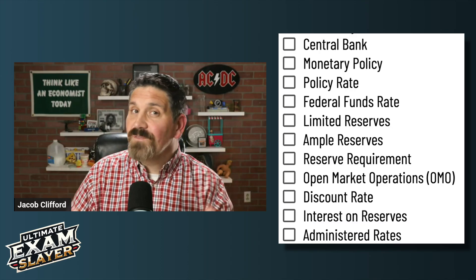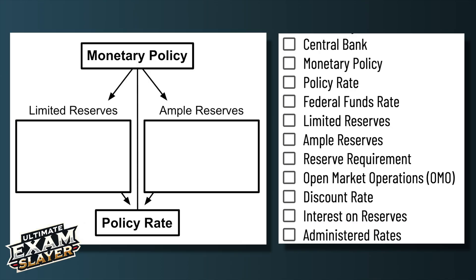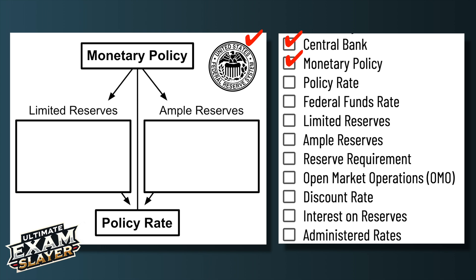There's a lot of confusion out there, so I'm going to solve the problem by giving you this graphic organizer that covers all these terms. Monetary policy is done by the central bank — it's increasing and decreasing the money supply to affect interest rates and affect the overall economy. The central bank, which is like the banker's bank, does monetary policy to affect the policy rate.